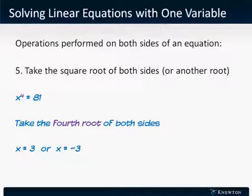Taking the square root or another root. x to the fourth equals 81. Take the fourth root of both sides. x equals 3 or x equals minus 3. Remember that when we take the even root of a positive number, the result can be either positive or negative.